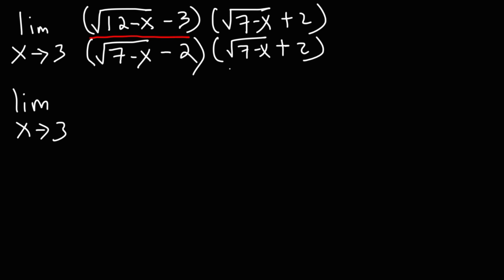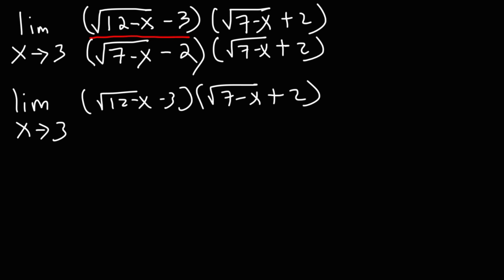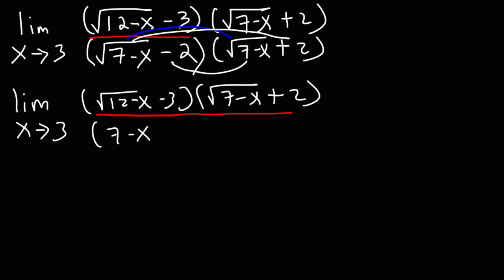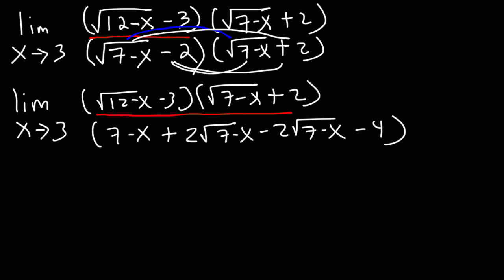For the numerator, we're not going to do anything — we're not going to FOIL those two expressions, just rewrite it as is. For the denominator, that's a different story. We want to FOIL it because it will simplify. The square root of 7 minus x times itself is simply 7 minus x. The middle terms — positive 2 times the square root of 7 minus x, and negative 2 times the square root of 7 minus x — will cancel. And then negative 2 times 2 is negative 4.